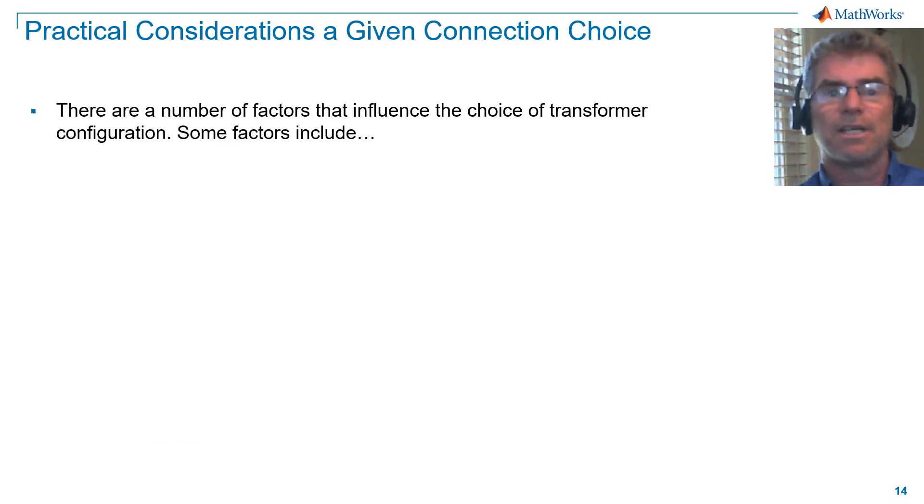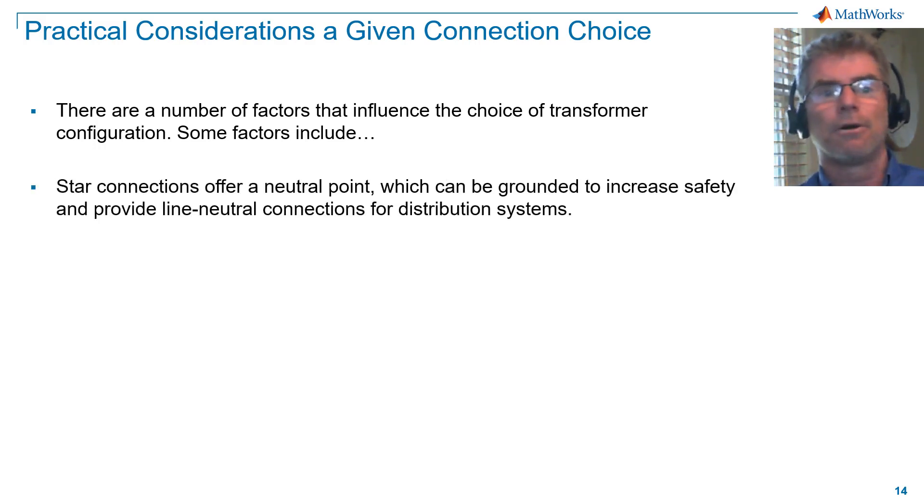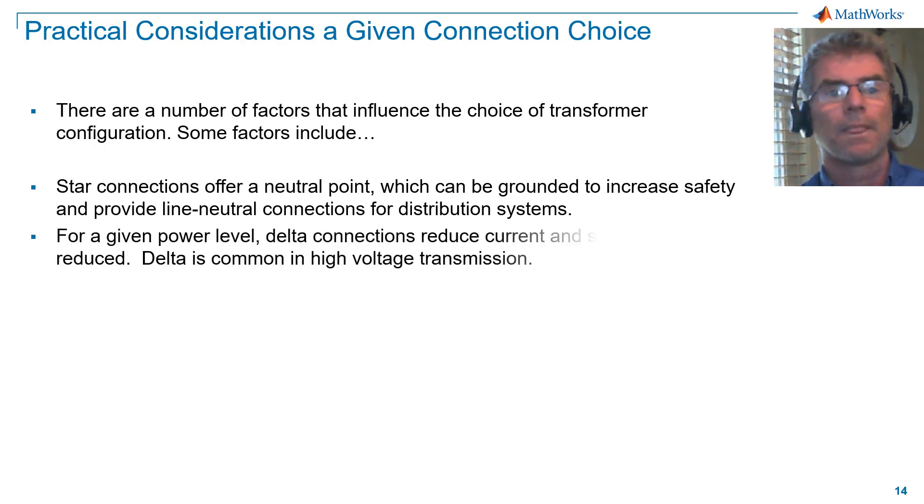There are a number of factors that influence the choice of transformer configuration. Some factors include star connections offer a neutral point, which can be grounded to increase safety and provide line-to-neutral connections for distribution systems. For a given power level, delta connections reduce current, and so I squared R losses are reduced. Delta is common in high voltage transmission.